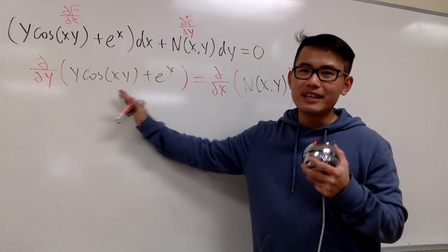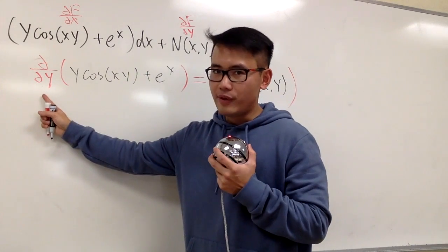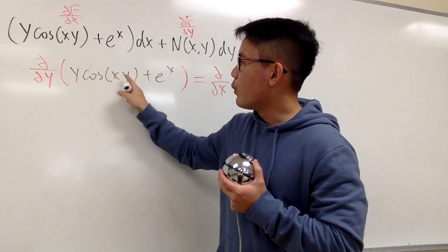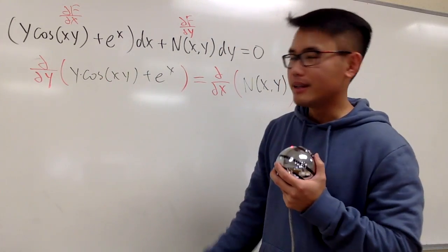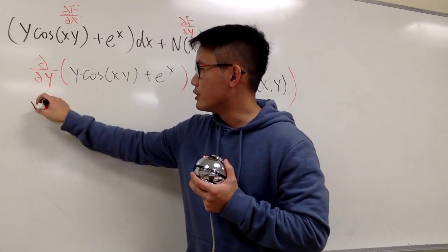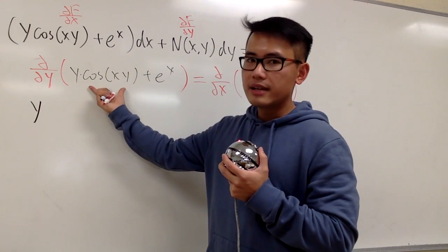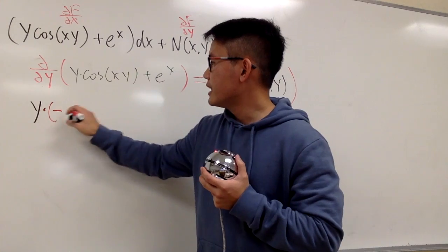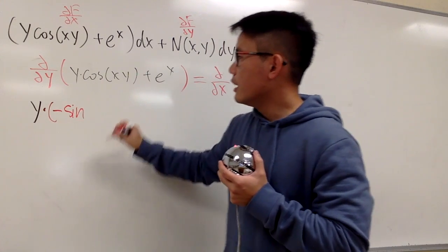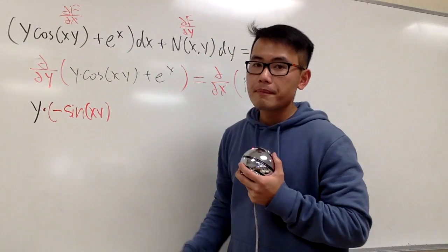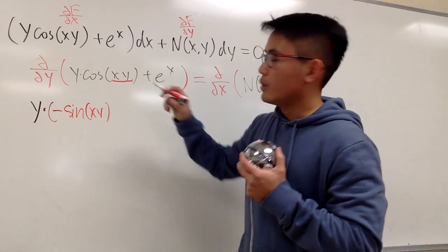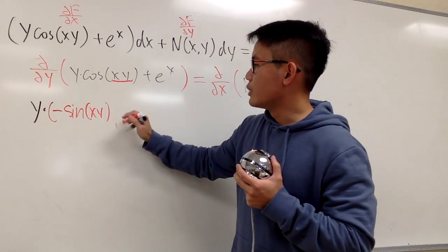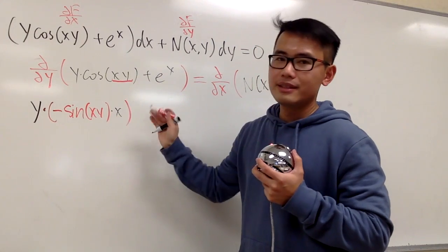It seems that we can do something on the left-hand side, so we'll go ahead and do it. y is the variable, x is the constant. We have y times cosine of xy, and we know we have to do the product rule. Let's keep the first function, which is just y, and multiply by the derivative of the second. The derivative of cosine is negative sine, so we put down negative sine of xy. We also have to multiply by the derivative of xy in the y world — x is the constant — so we multiply by x. This is the chain rule.